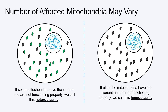Since each mitochondrion contains its own DNA, the number of mitochondria affected by a variant may vary. If some mitochondria have the variant, we call this heteroplasmy, represented by the cell with both green and black mitochondria. Whereas if all of the mitochondria have the variant, we call this homoplasmy, represented by the cell with all black mitochondria. The number of mitochondria affected and the types of cells they are in can contribute to an individual's symptoms.